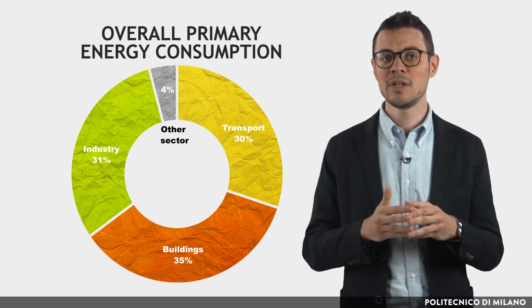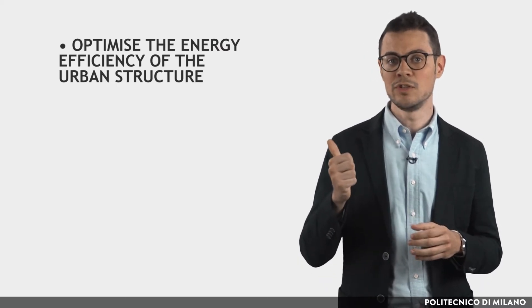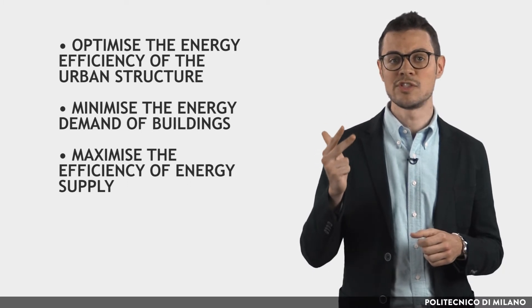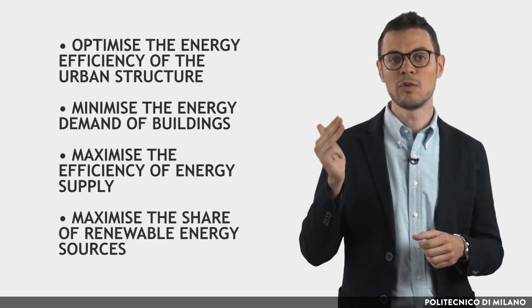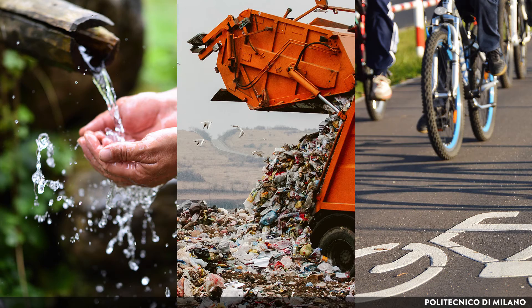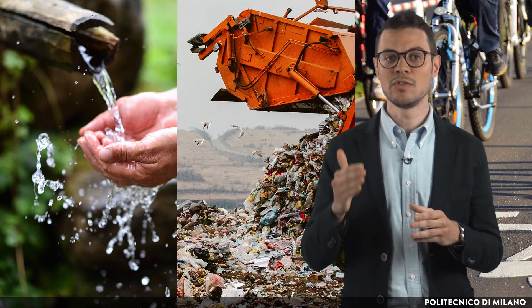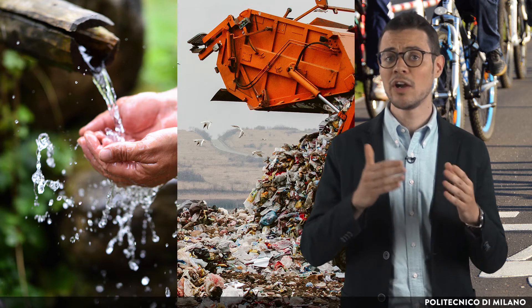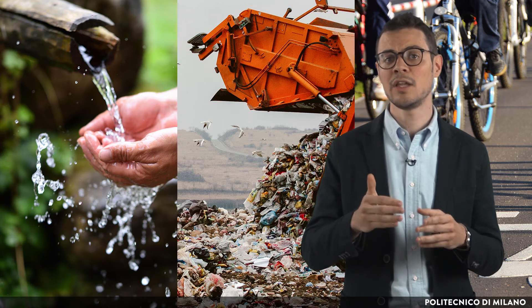The fulfillment of this aim involves a combination of several actions: optimize the energy efficiency of the urban structure, minimize the energy demand of buildings, maximize the efficiency of energy supply, and maximize the share of renewable energy sources. This list is not exhaustive since the entire urban metabolism is based on energy or linked to it, so other actions must be taken into consideration involving water, waste and mobility. The aim is to increase the energy efficiency of the urban structure, of individual buildings, of mobility and of the energy supply system, and furthermore to maximize the proportion of energy from clean and renewable sources.